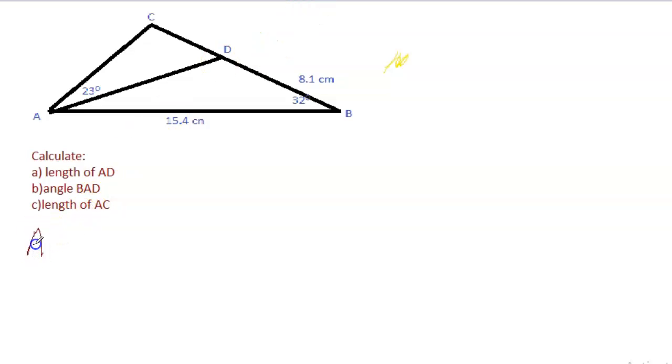We're going to apply the cosine rule to part a. On the cosine rule, let me call the length of this side b. Applying the cosine rule, we take the side and square it. So b squared is equal to the other two sides squared, so it's equal to 8.1 squared plus 15.4 squared.